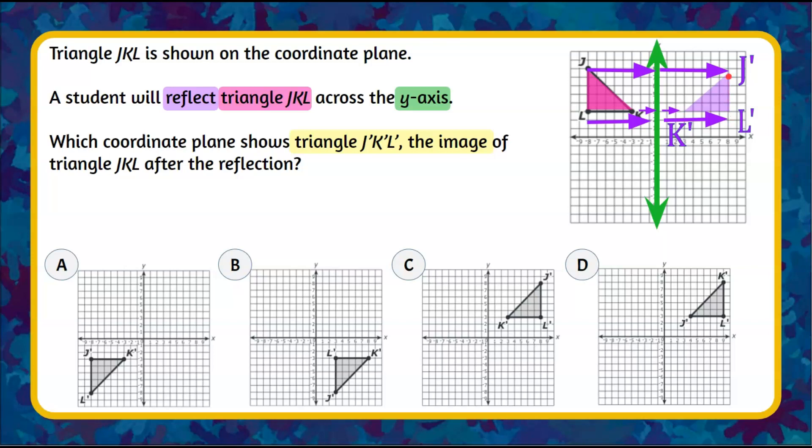And then we can draw our triangle. So this is the image J-prime, K-prime, L-prime of the reflected triangle. So now we need to go and determine which one of these coordinate planes shows this image.